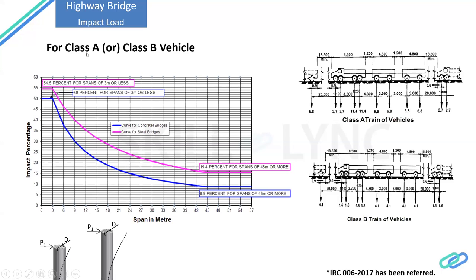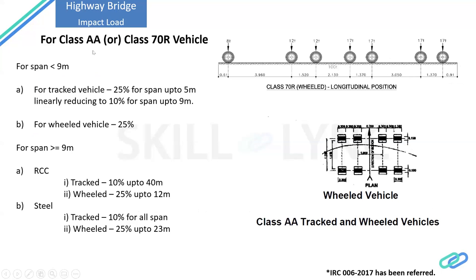This graph shows for class A and class B vehicle. The next one shows for class AA and class 70R. They are classified: for span less than 9 meters, for tracked vehicle, it is 25% for span up to 5 meters, linearly varying to 10% for span up to 9 meters. For wheeled vehicle, it is 25%. For RCC bridge and steel bridge, it is classified like this. In class 70R, there is a wheeled one and tracked one, with different wheel configurations. Based on this, we can compute the impact factor. This is how we find the impact factor for highway bridges.